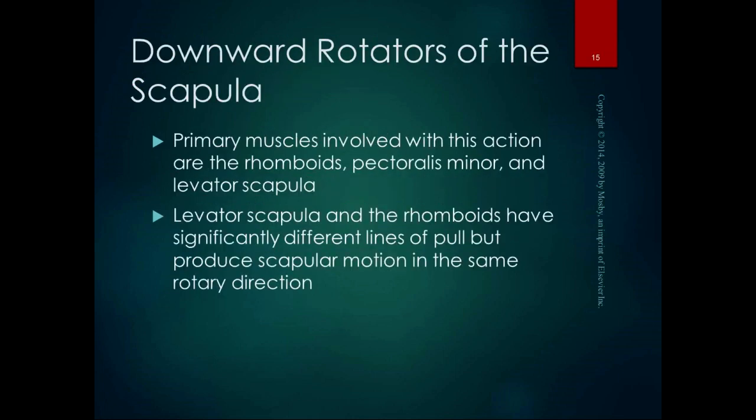The downward rotators of the scapula are the rhomboids, pec minor, and levator scapula. The levator scapula and the rhomboids have different lines of pull but produce scapular motion in the same rotary direction. The levator scapula is an elevator, the rhomboids are retractors and slight elevators, and the pec minor is a depressor — together causing downward rotation.